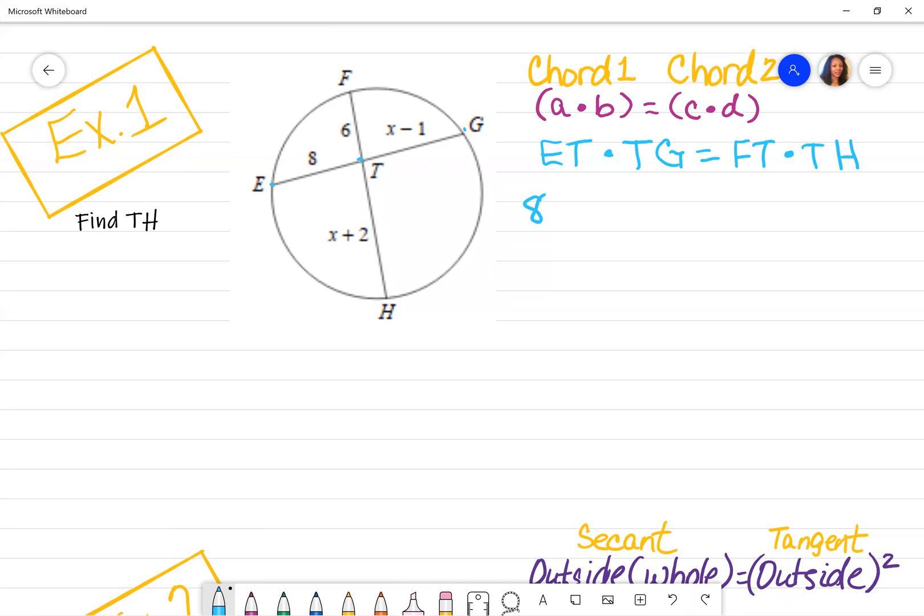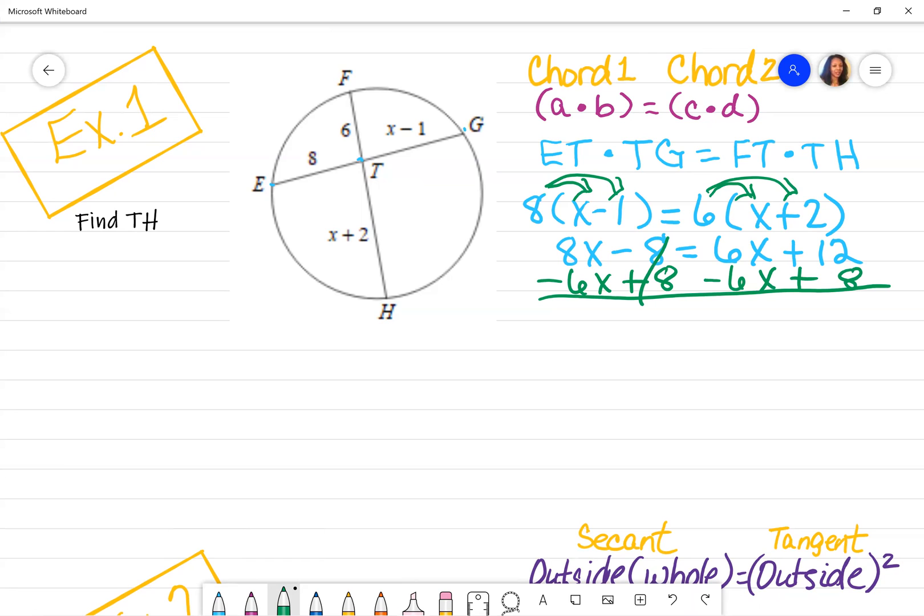ET is represented by 8. TG is X minus 1. FT is 6. And then TH is X plus 2. So now you just want to distribute what's on the outside of the parentheses to everything that's inside of the parentheses until you end up with 8X minus 8 is equal to 6X plus 12. Now you want to subtract 6X on both sides. And you can go ahead and add 8 in the same step on both sides. What you do to one side, you do to the other. And so now once you simplify, you're left with 2X is equal to 20.